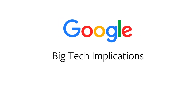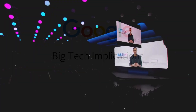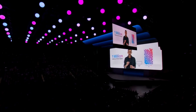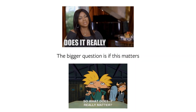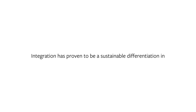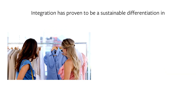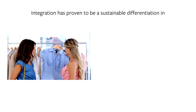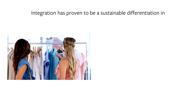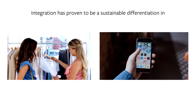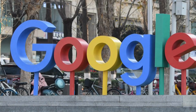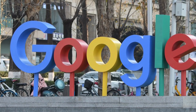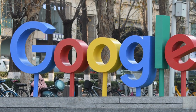Big Tech Implications: Google. The first takeaway from this analysis is that Google's strategy truly is unique. They are, as Nadella noted, the Apple of AI. The bigger question is if this matters. As I noted above, integration has proven to be a sustainable differentiation in the consumer market, where the buyer is the user and thus values the user experience benefits that come from integration, and when those user experience benefits are manifested in devices. Google is certainly building products for the consumer market, but those products are not devices — they are internet services.